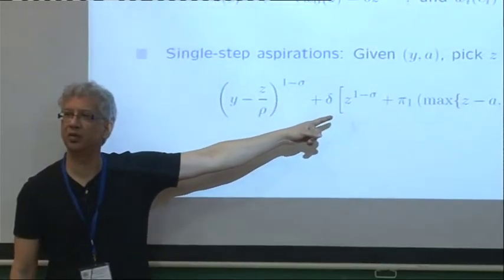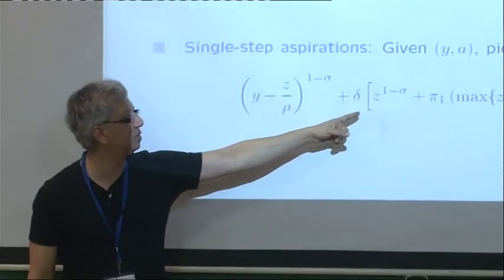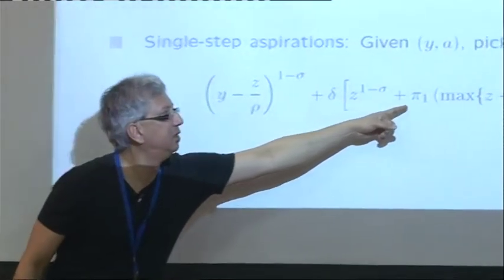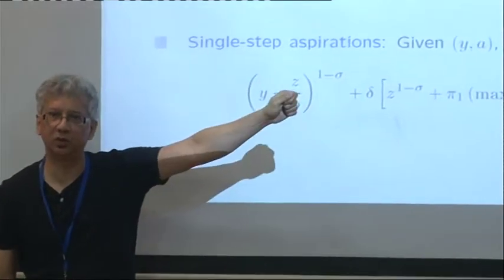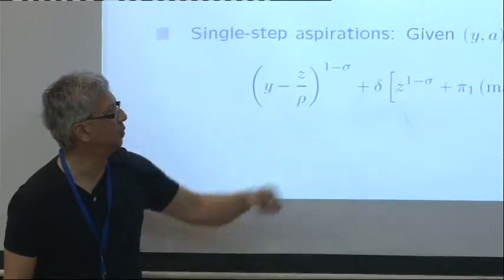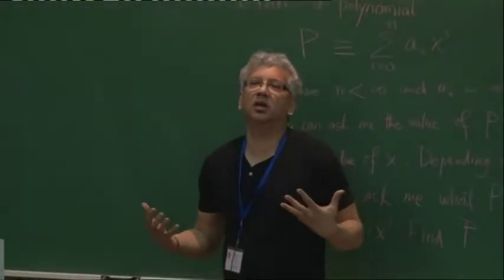Let's just review it for a second just to see what it looks like. So what happens with single step aspirations? This is the consumption of the parent today. And she gets some utility, the usual utility. Then here's the intrinsic utility she gets from the child. Z to the power 1 minus sigma. And then this is the additional utility kick that she gets if she manages to put the child above the aspiration threshold, which I'm calling A over here.